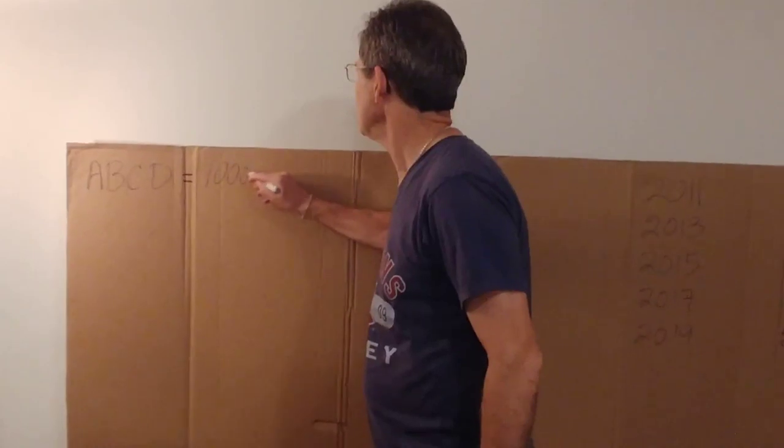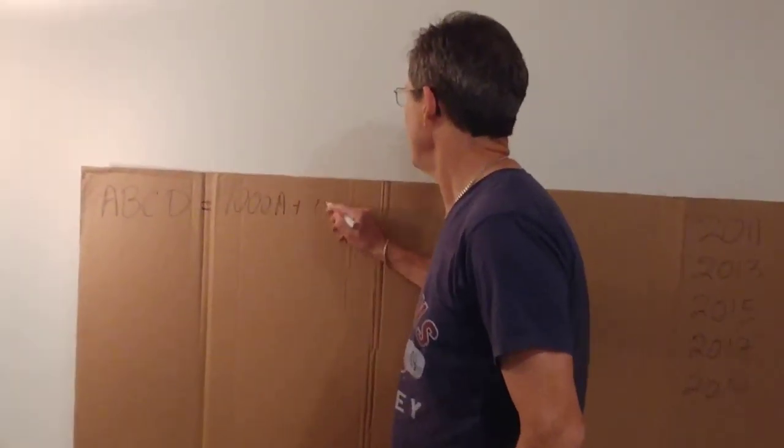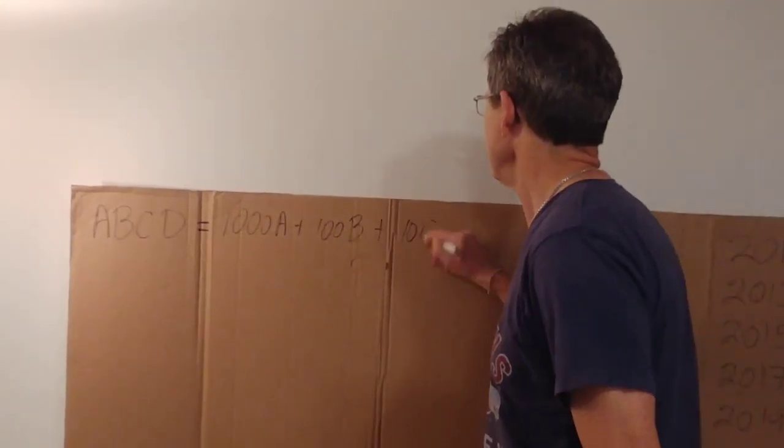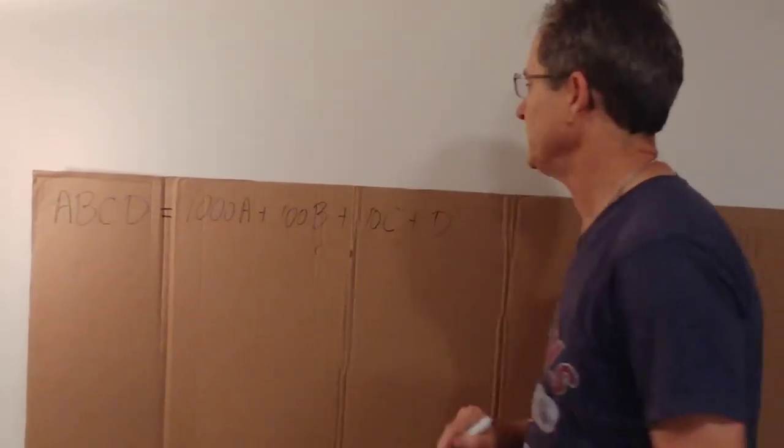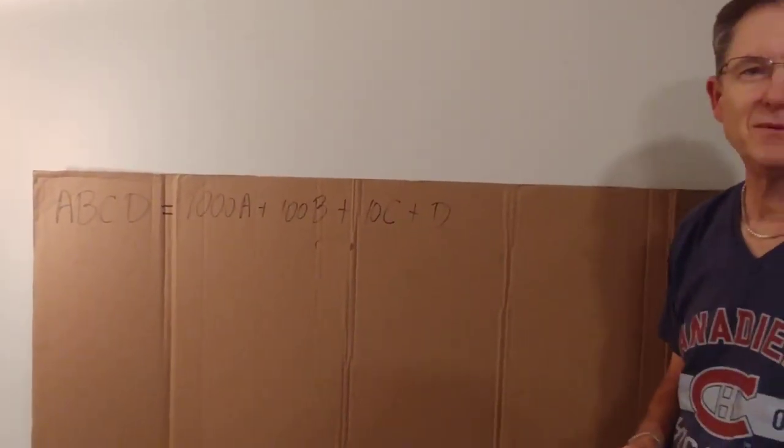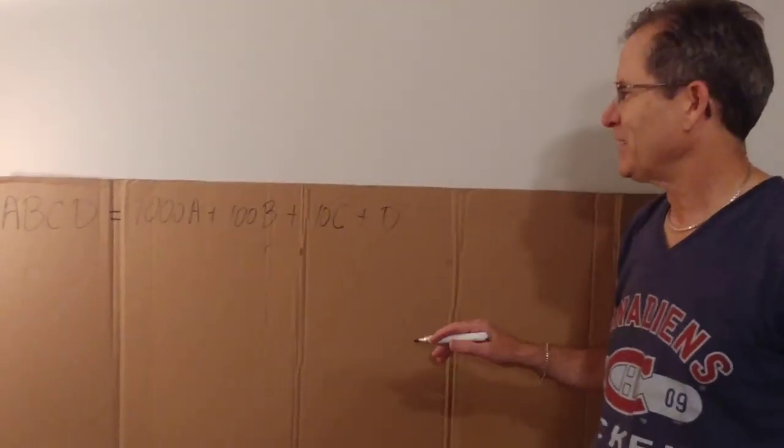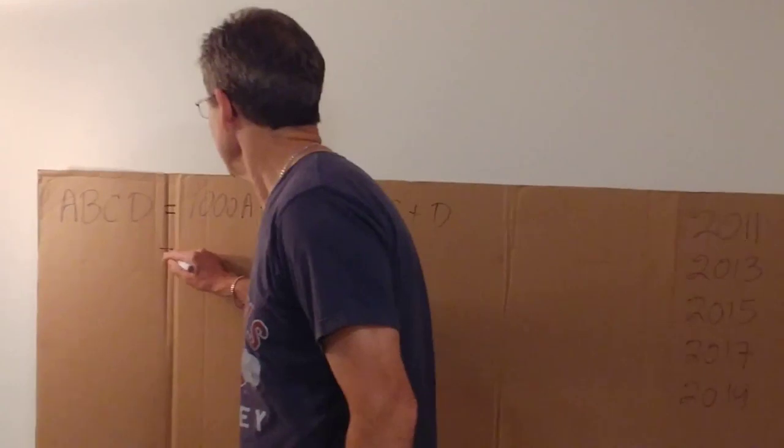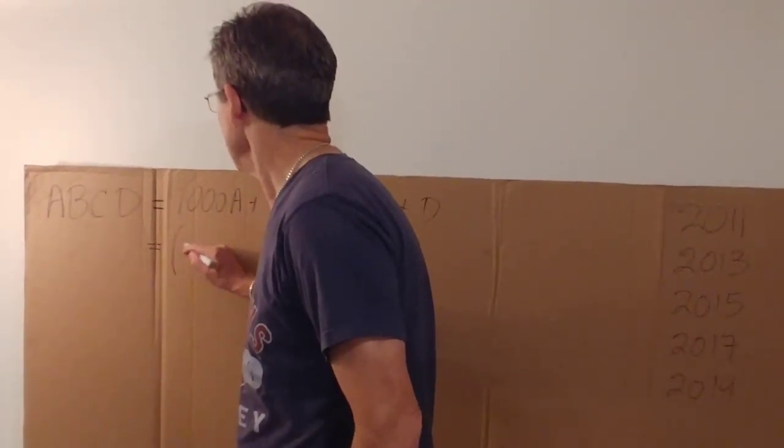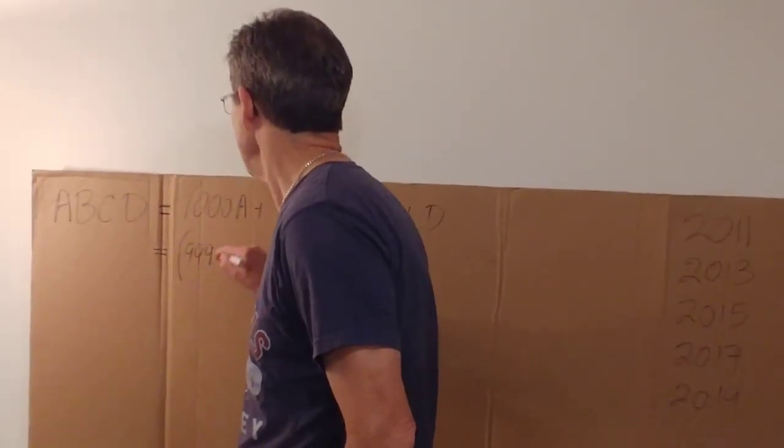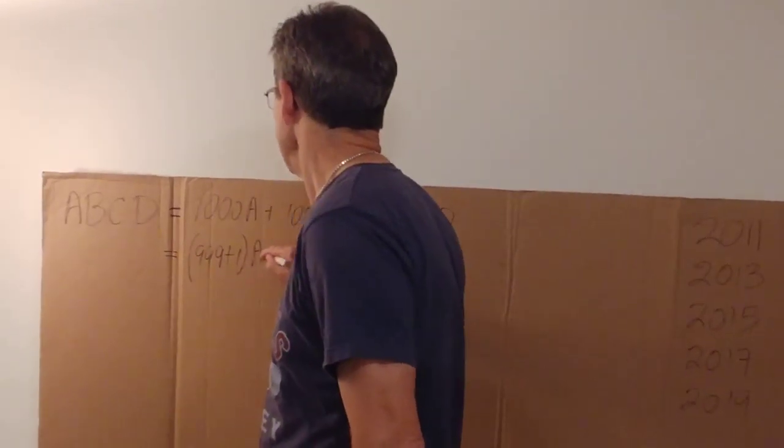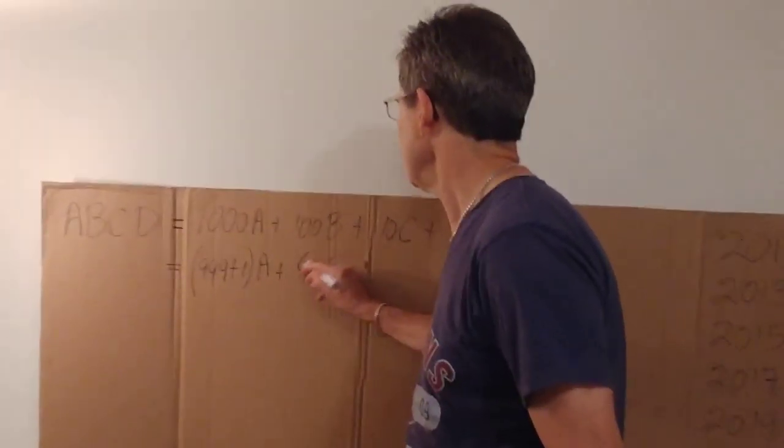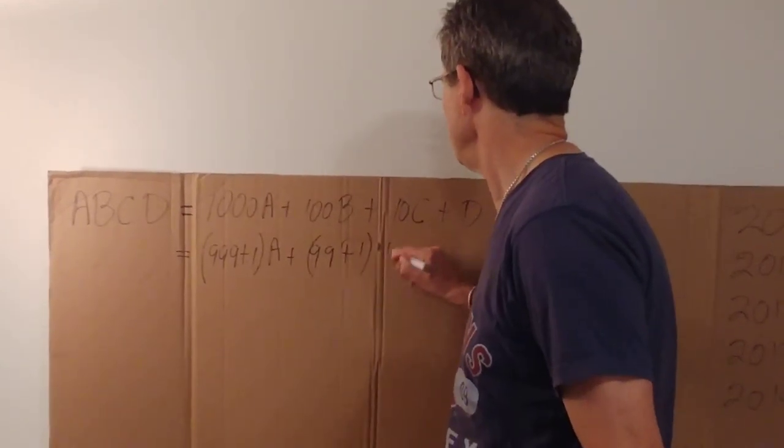1000A plus 100B plus 10 times C plus D. And you can see again I'm using my cardboard blackboard. I can break the thousand into 999 plus 1 times A, the 100 into 99 plus 1 times B,